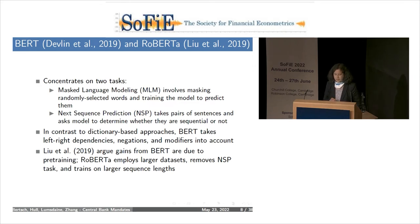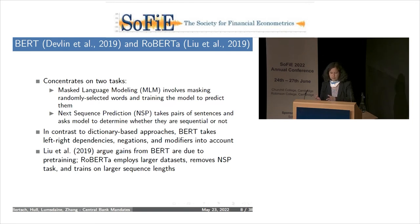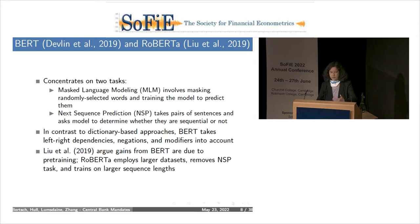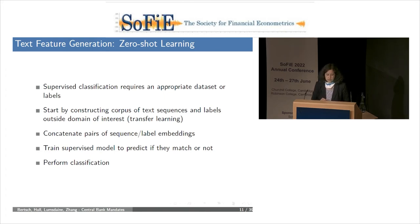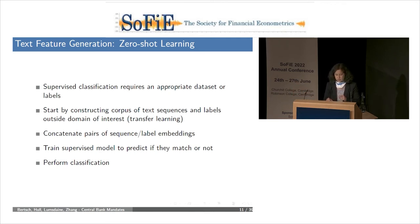The RoBERTa method by Liu et al. argues that BERT's gains are mainly due to pre-training, so RoBERTa employs much larger datasets and removes the next sentence prediction task, training on larger and larger sequence lengths. For employing these algorithms, we use zero-shot learning. Supervised classification, like LDA, requires an appropriate dataset or labels. We start by constructing our corpus of text sequences and labels outside the domain of interest using the Semantic Scholar database, then concatenate pairs of sequences and train the supervised model to predict if they match or not.